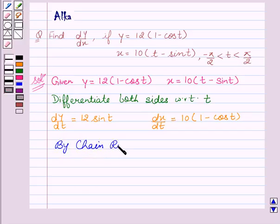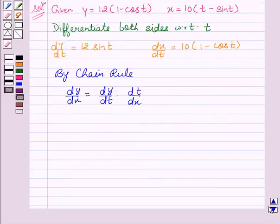that is, dy upon dx equal to dy upon dt into dt upon dx. We get dy upon dt is 12 sin t upon 10 into 1 minus cos t.